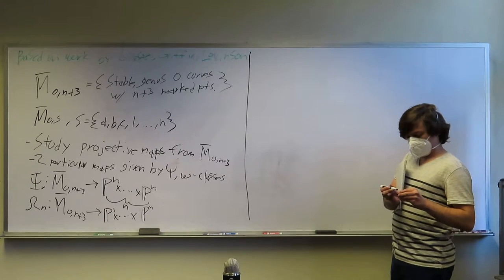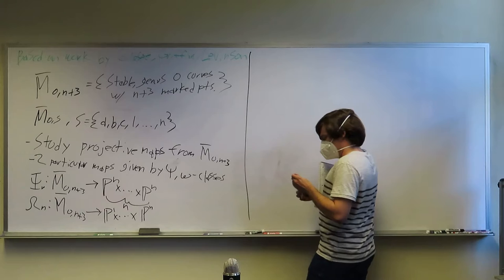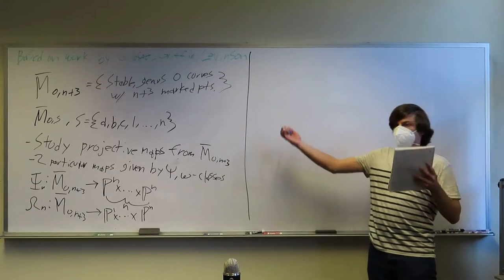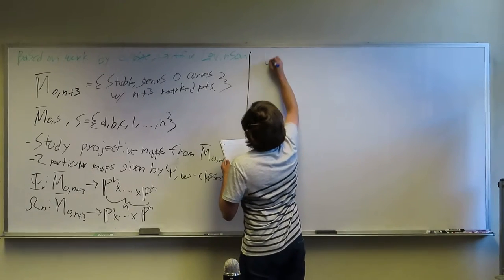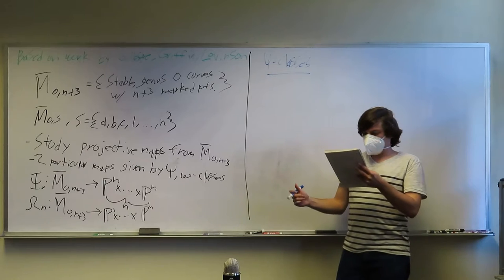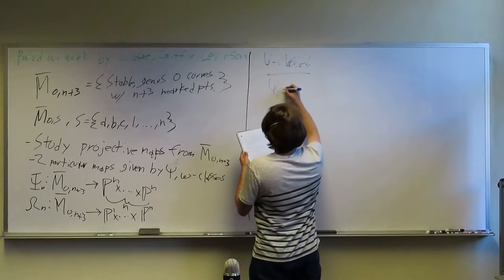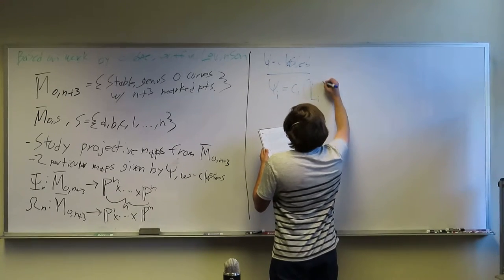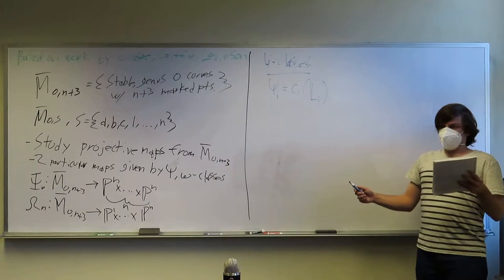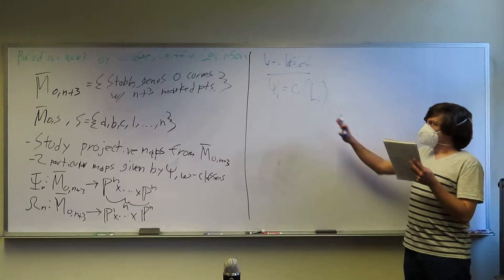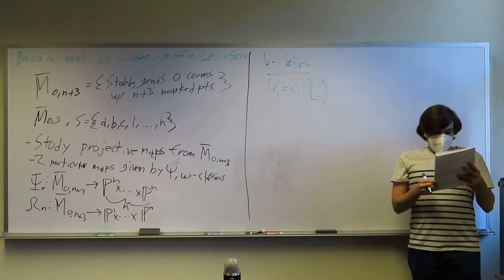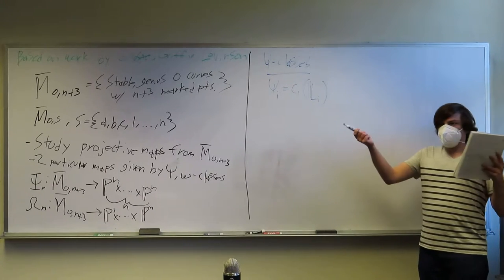Two particular maps that are given by psi and omega classes. One of them is going to be psi_n, which is from M0,n+3 bar. This will map to P^n cross P^n, where we have n copies of P^n. And then the other one we'll be looking at, omega_n, is from the same space. And this one goes into P^1 cross P^2 dot dot dot P^n.